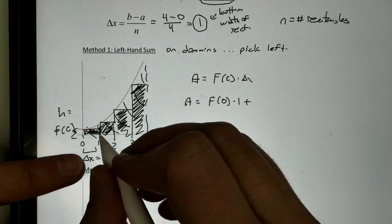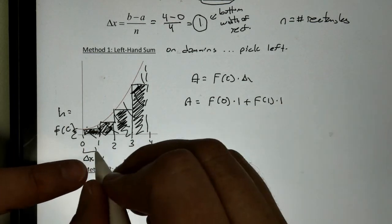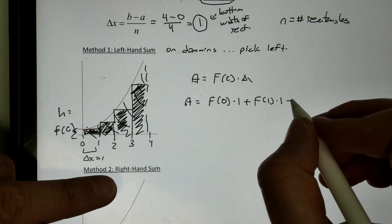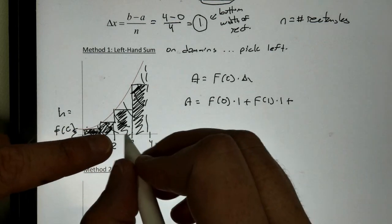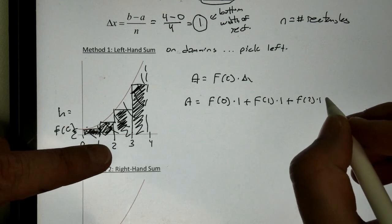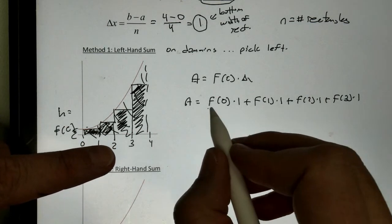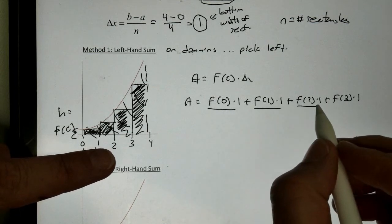The next one, we used the value at 1, so f of 1 times 1. My delta x is always 1. And, in the third rectangle, we used the left-hand number, which was a 2, so it was f of 2 times 1, and then f of 3 times 1. We should have four answers here.